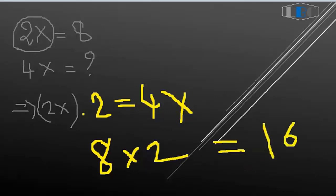So 4X equal 16. Why? Because 2X and 2, so 8 and 2 times 2, okay, 16.